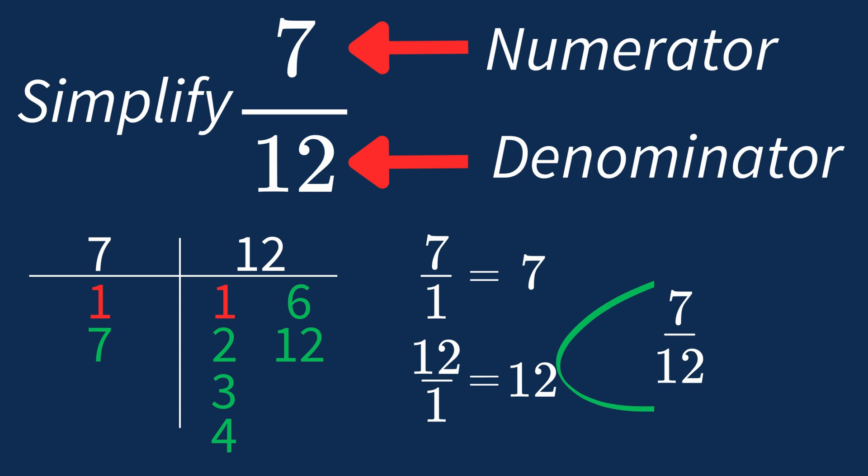This shows us that 7 over 12 is already in its simplest form. There's no larger number that can divide both parts evenly. So 7 over 12 is an irreducible fraction, meaning it's as simple as it can get.